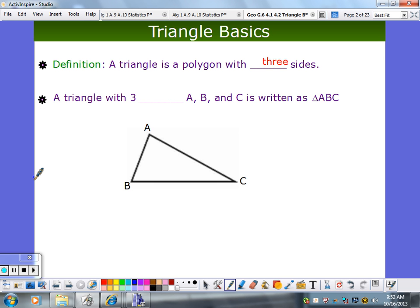So a triangle with three blanks, A, B, and C, is written as triangle A, B, C. Three what? Angle. Vertices. Vertices.